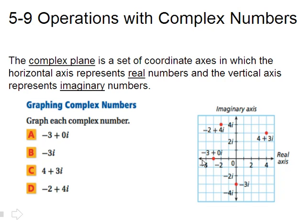Negative 3i is an imaginary number. And so that's going to go down 3 on the imaginary axis. Example C here, 4 plus 3i. That just means we go over 4 on the real axis and up 3 on the imaginary axis. And there it is right there. It looks kind of like a point.